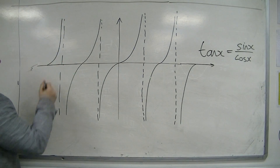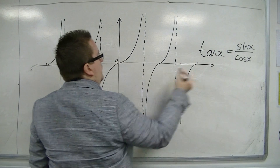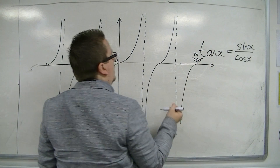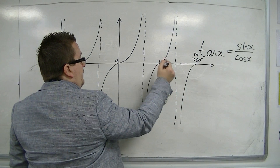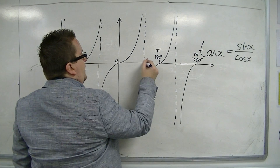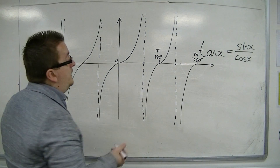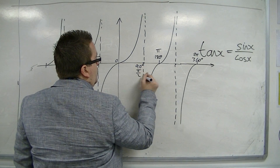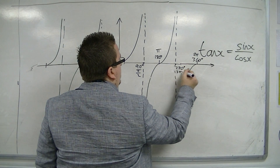Okay. So we're working between zero and 360, so that's 2 pi. If that's 360, then that's 180 degrees, so that's pi. These asymptotes — that's a quarter of the way, that's three quarters of the way. So this is at 90 degrees, or pi over 2, and this is at 270 degrees, or 3 pi over 2.